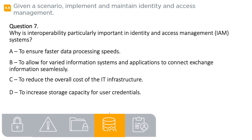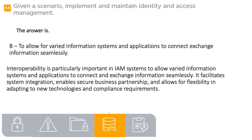Question 7. Why is interoperability particularly important in identity and access management (IAM) systems? A. To ensure faster data processing speeds. B. To allow for varied information systems and applications to connect and exchange information seamlessly. C. To reduce the overall cost of the IT infrastructure. D. To increase storage capacity for user credentials. The answer is B. Interoperability facilitates system integration, enables secure business partnerships, and allows for flexibility in adapting to new technologies and compliance requirements.